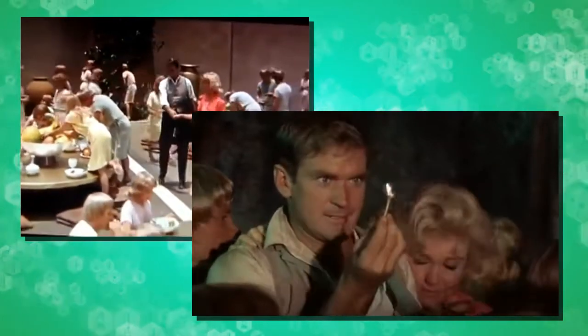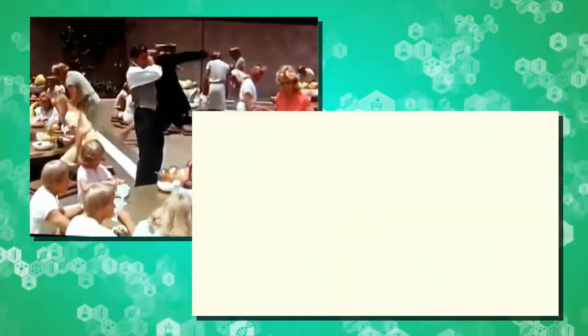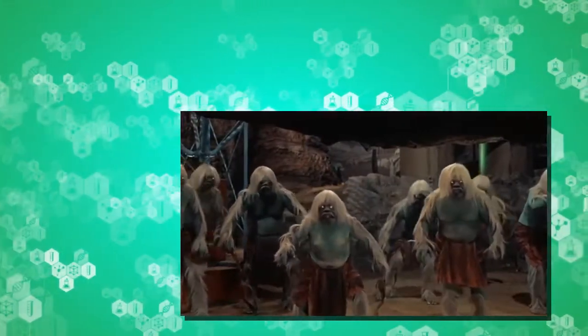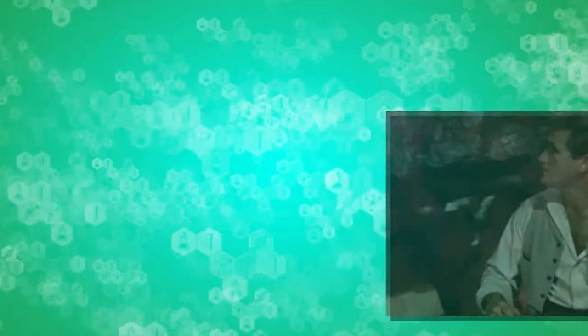Having nothing they need to do, the Eloi have slowly become like cattle, smaller than modern humans with subhuman intelligence. All they do is feed, play, and mate. When one of them, Weena, falls into a river, none of the other Eloi help her. She is rescued instead by the time traveller.